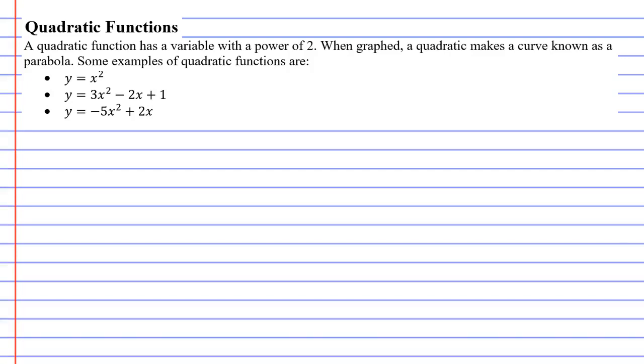In this video, we're going to introduce quadratic functions and we're also going to show you what they look like when we graph them. Basically, a quadratic function has a variable with a power of 2. If you're not sure what that means, just look at the three examples below. You'll notice they have the variable x with a power of 2 each time.